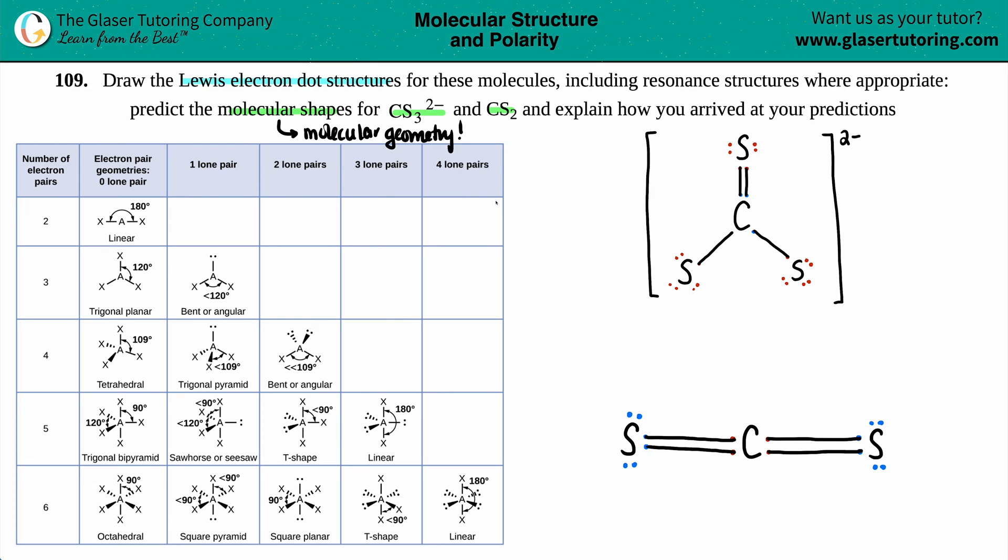Now, when you're trying to find out a molecular shape or geometry, it always comes from the central atom. So maybe I'll just say that this is obviously CS₃²⁻ and this is the CS₂. Now, for both of them, you always go by the central atom. So the central atom in this case would be carbon and carbon.